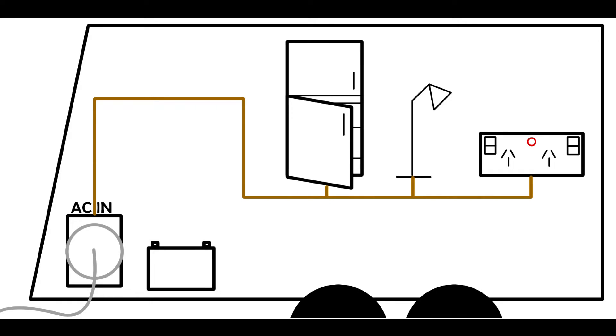So let's say this is your caravan and your appliances usually run from mains power. Let's cut that main power wire and put our inverter there.